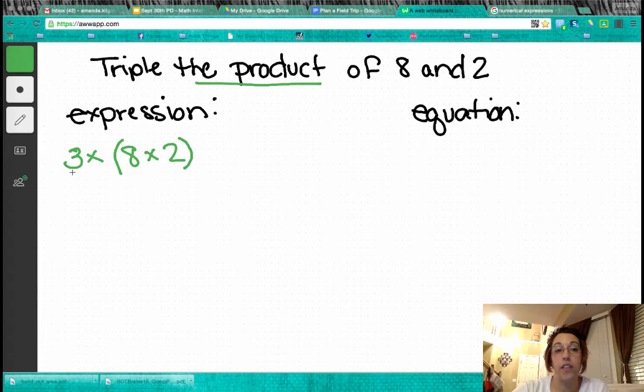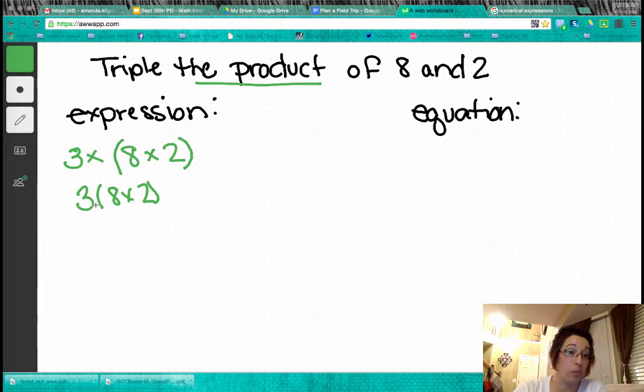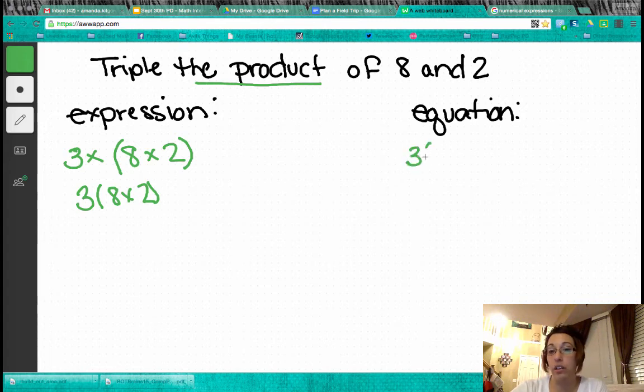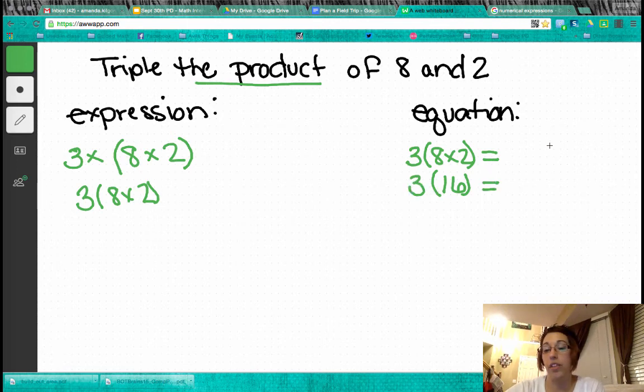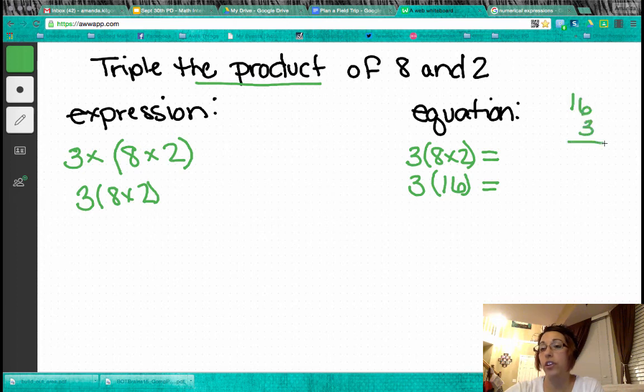And I also look at this. I've got 3 times 8 times 2. This could also be written without the multiplication sign on the outside of the parentheses. Because anytime you have a number next to parentheses, it automatically means to multiply. So let's move over here to our equation side. We should have 3 times 8 times 2 equals, because it's an equation. 8 times 2 is 16. We keep the 3 on the outside. And we've got to do some scratch paperwork over here. 8, 1, 4. So our answer would be 48.